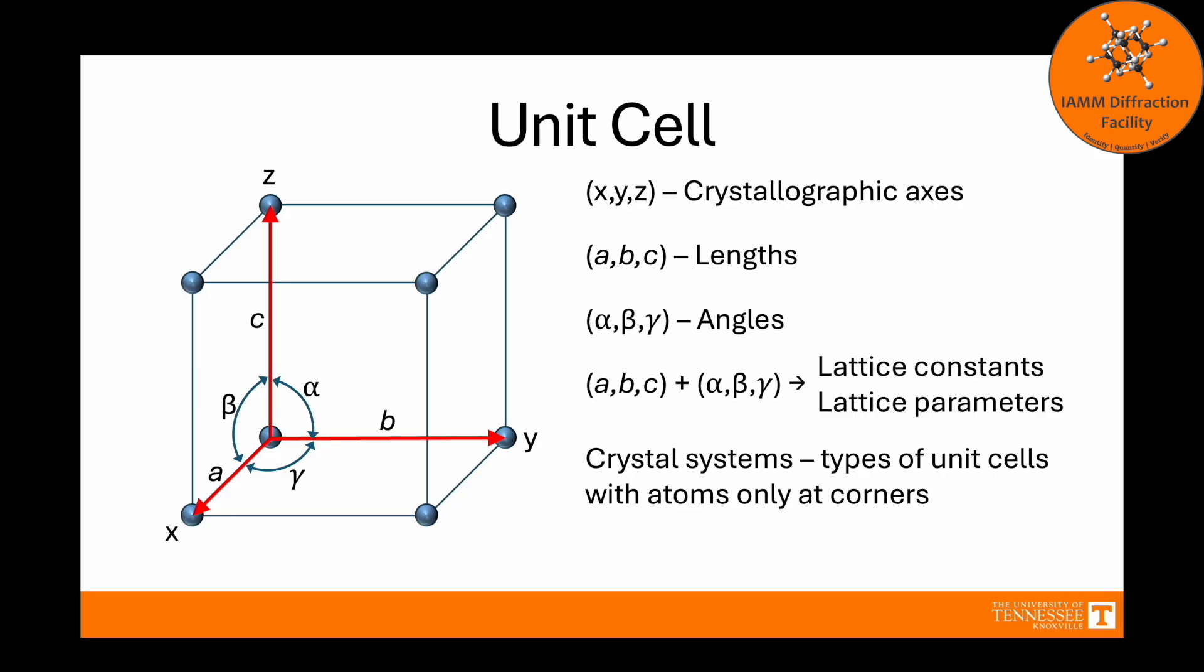A crystal system is a type of unit cell with atoms only at corners, which is what we see here in this unit cell. Finally, for this video, we are going to assume that all unit cells that we see only contain one type of atom, such as iron or terbium. It could be that you have a material that has multiple types of atoms. We are not going to address that in this video, but we will in a future video.